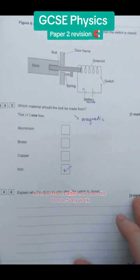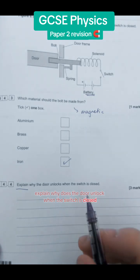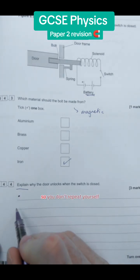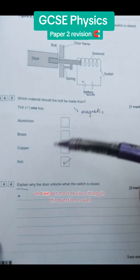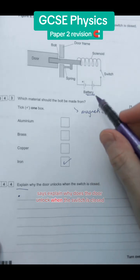The next question is how does the door actually work. Explain why the door unlocks when the switch is closed. So we've got to go a step at a time. I would definitely recommend using bullet points for questions like this so you don't just repeat yourself. And we get marks for obvious things in this question as well.